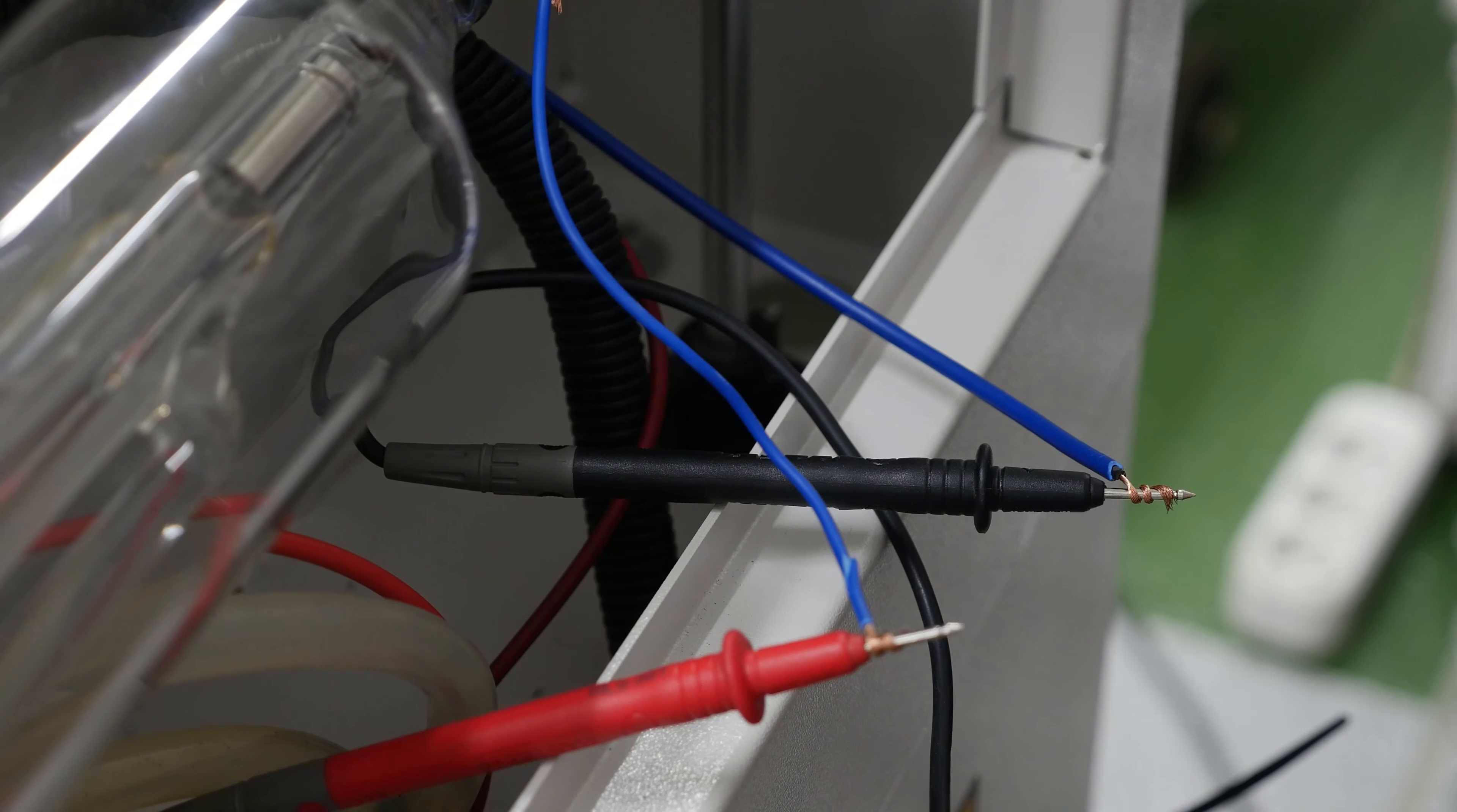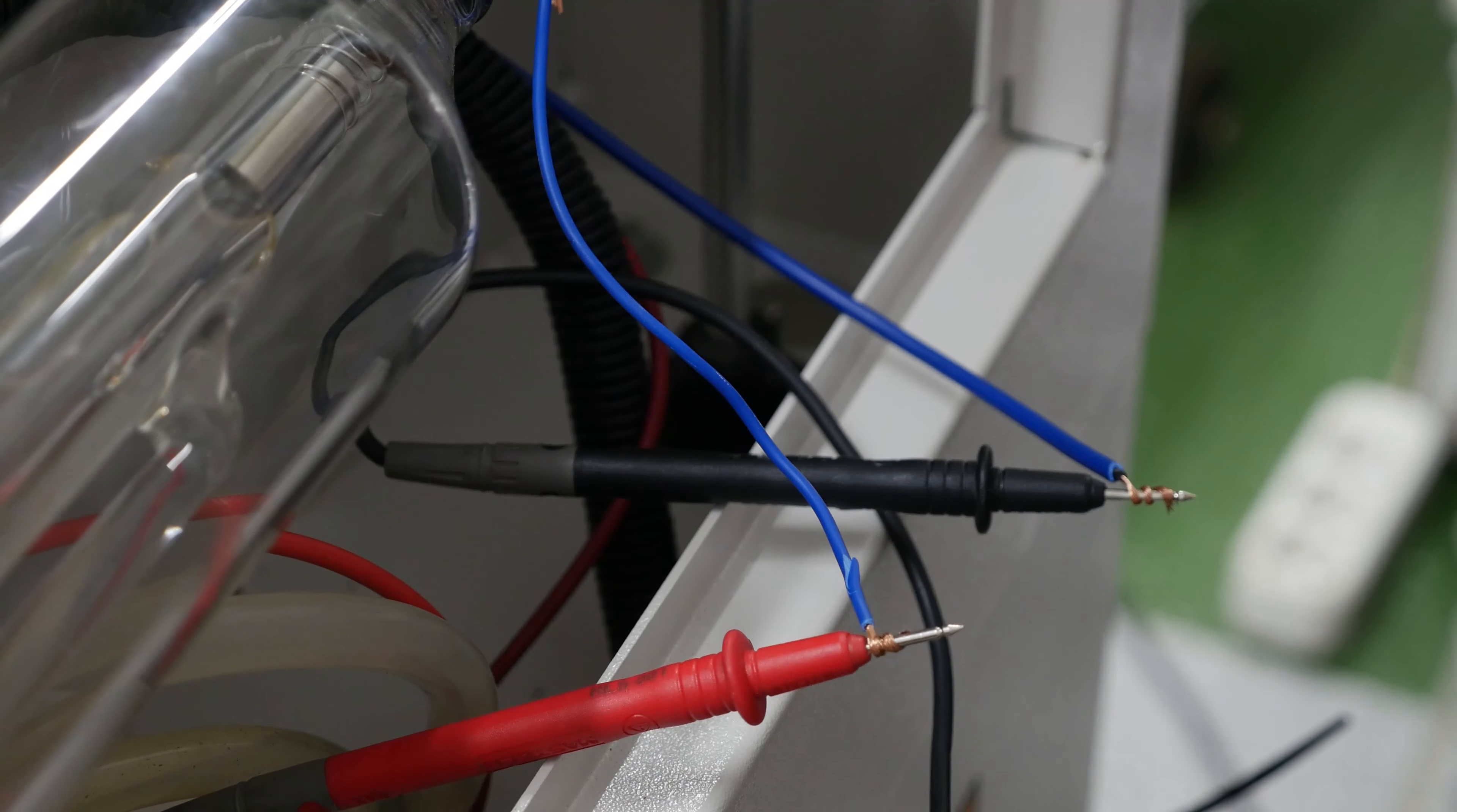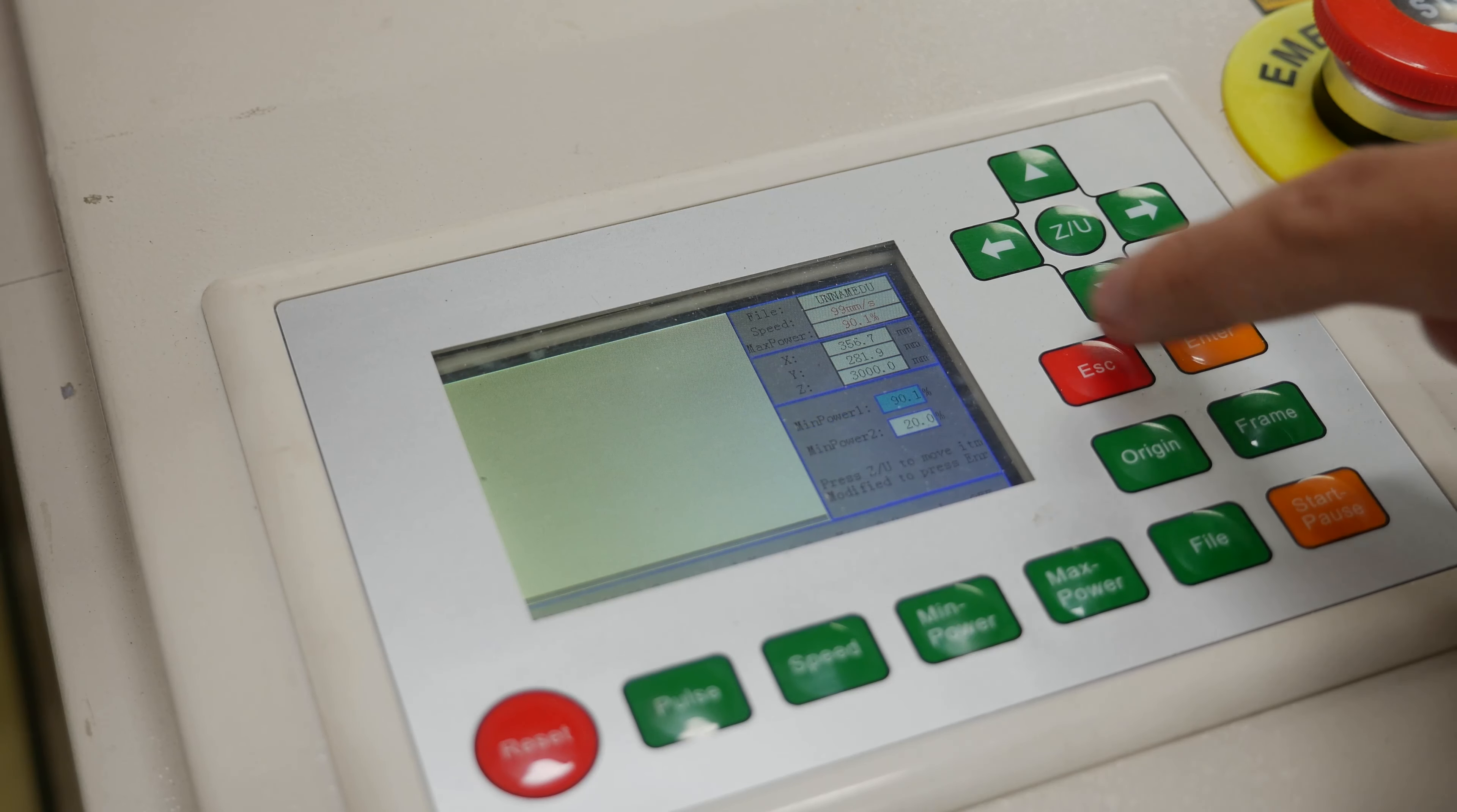Take the multimeter. Connect the number one wire to the number one tester and the number two wire to the number two tester. The order is random. Switch on the multimeter and set it in the position of measuring current up to 200 milliamps. Set the maximum possible laser beam power on the machine's display.